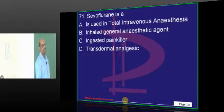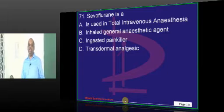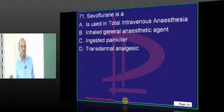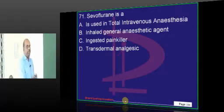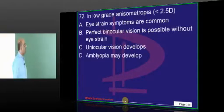Coflurane is what? Very simple question. Halothane, Nflurane, Coflurane — they are all examples of inhalational general anaesthetic agents.